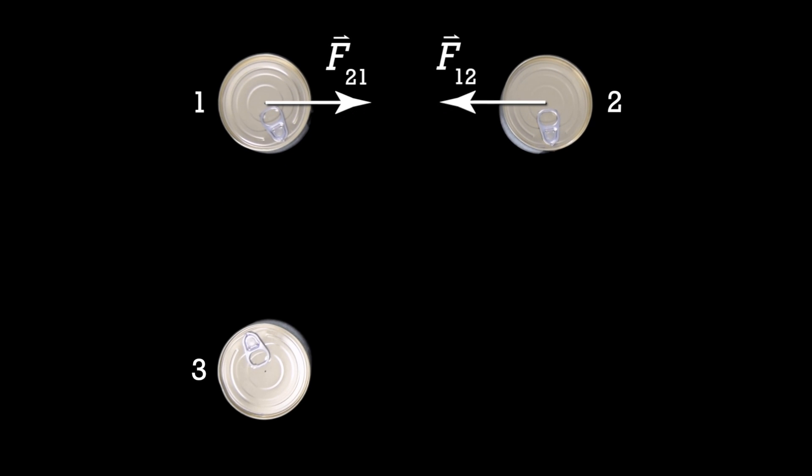Now let's add a third can. Bobby, what additional gravitational forces exist in this universe? Well, can 1 is pulled toward can 3 and can 3 is pulled toward can 1. Oh, and can 2 is pulled toward can 3 and can 3 is pulled toward can 2. Correct.